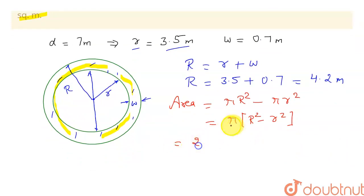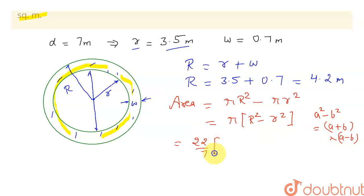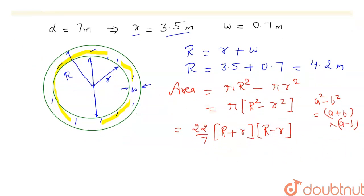Using pi as 22/7, and applying the algebraic identity a² − b² = (a + b)(a − b), we can rewrite the area as pi × (R + r) × (R − r), which makes it easier to calculate.